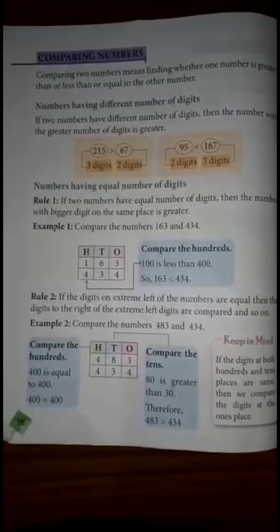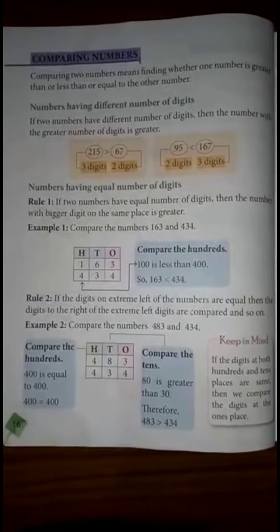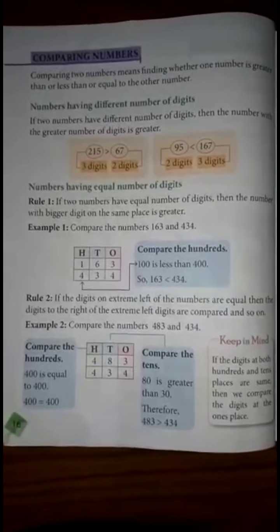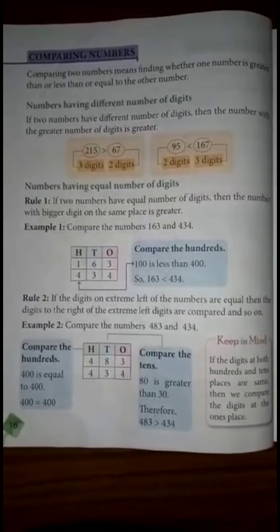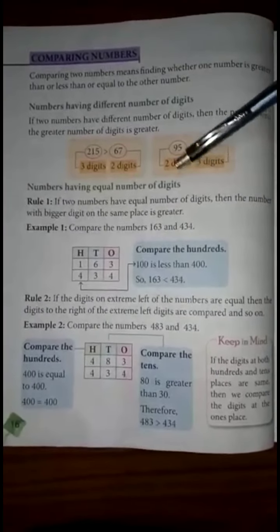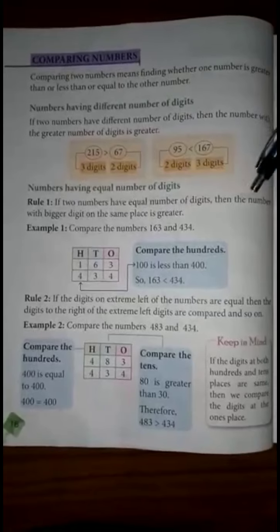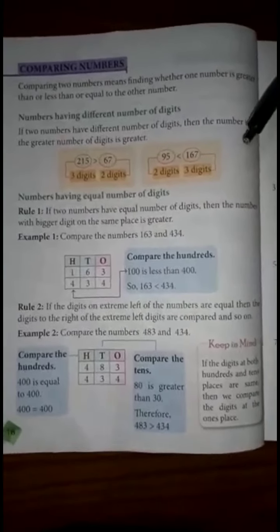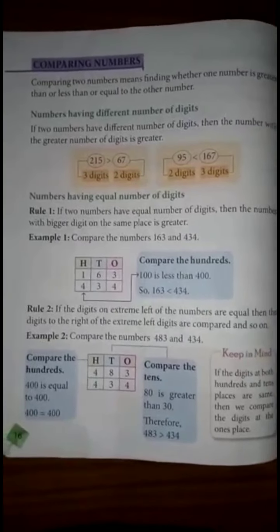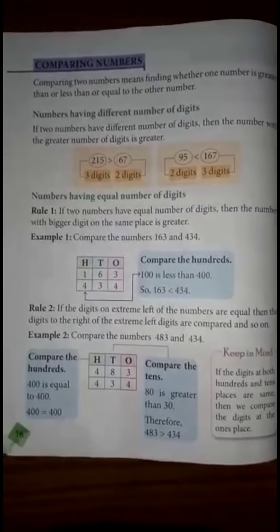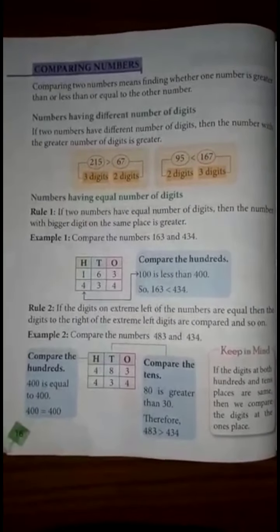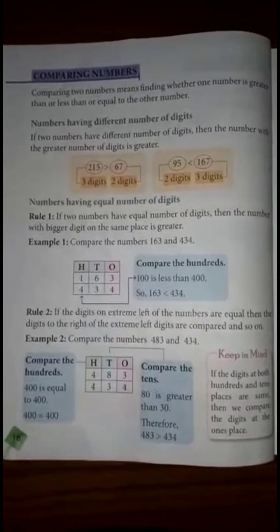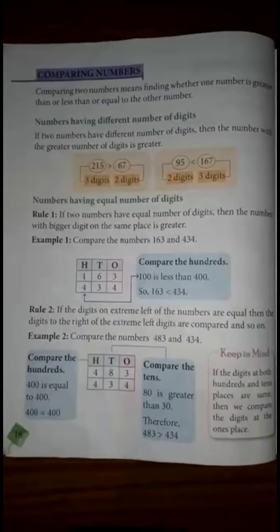The second rule is for numbers having an equal number of digits. If two numbers have an equal number of digits, then the number with the bigger digit at the same place value is greater. We compare digit by digit starting from the leftmost place.